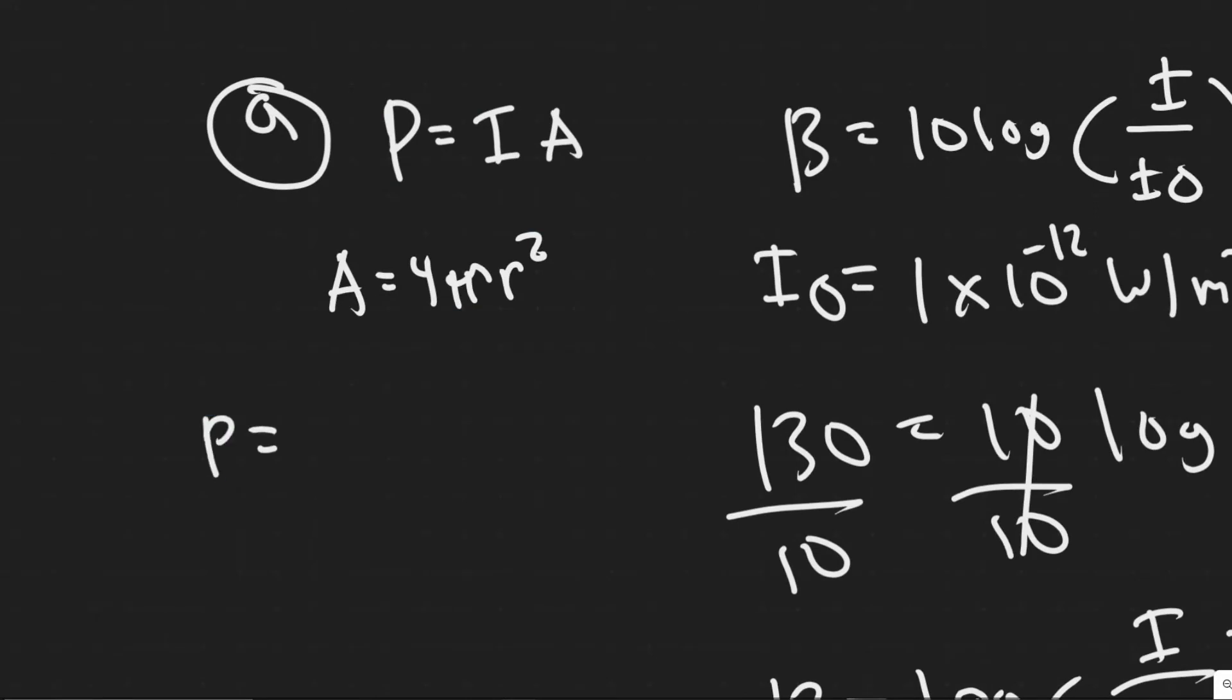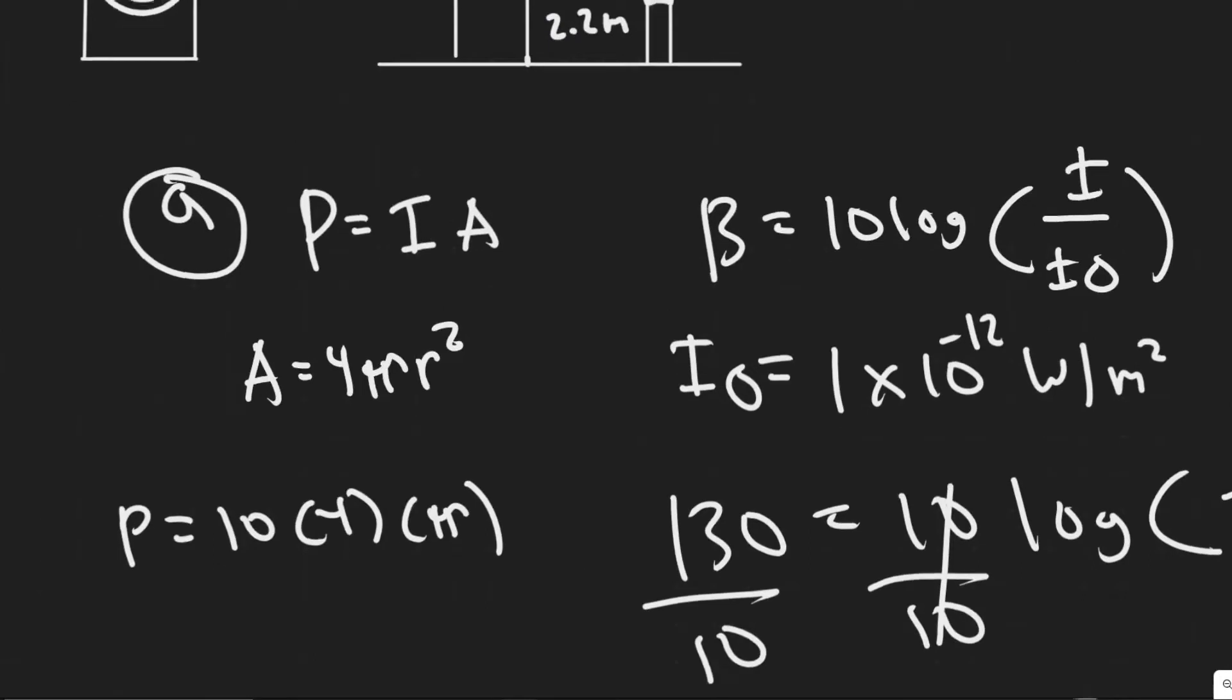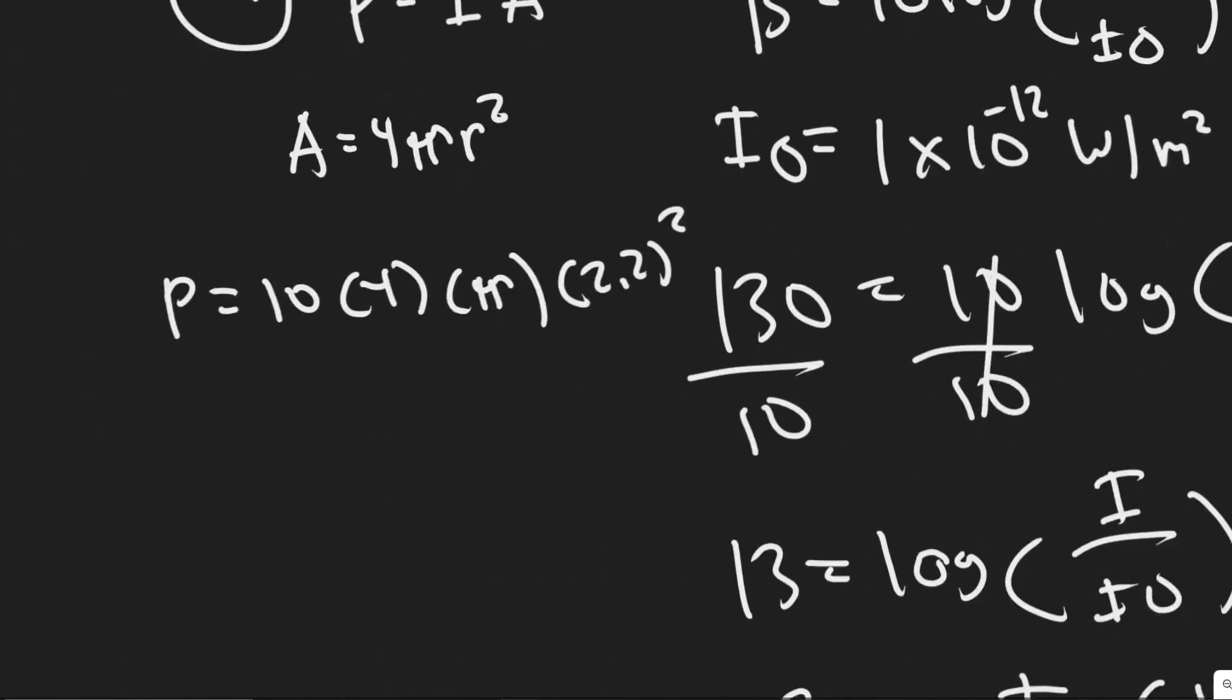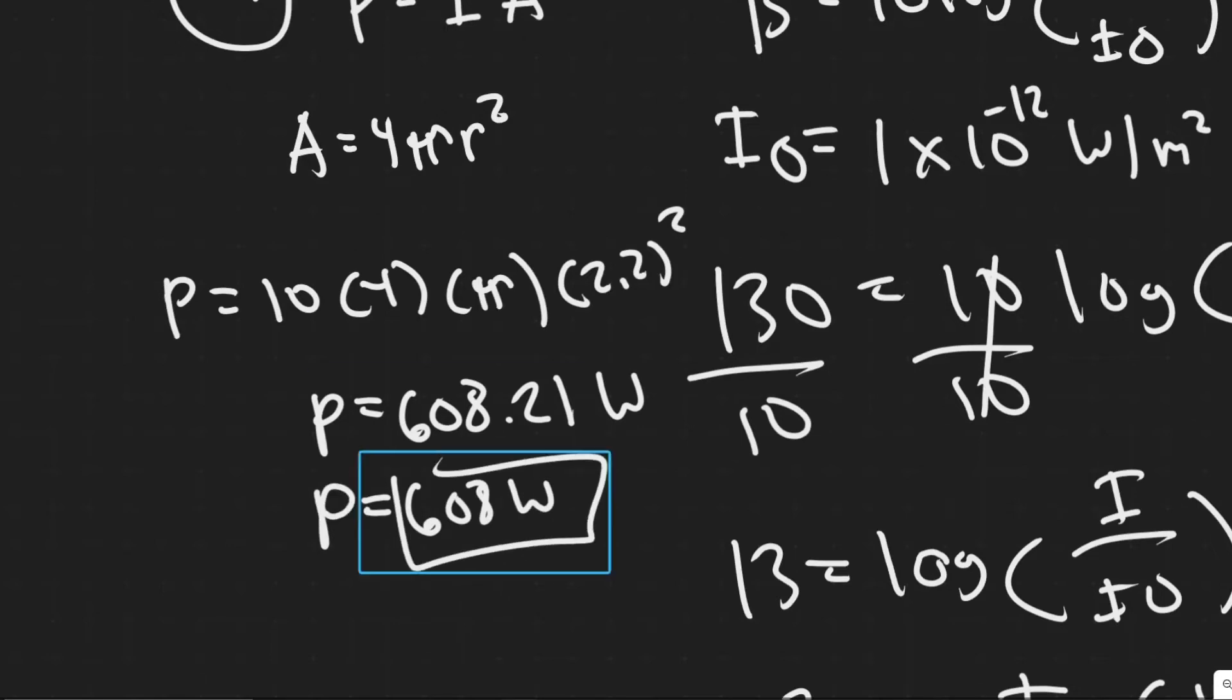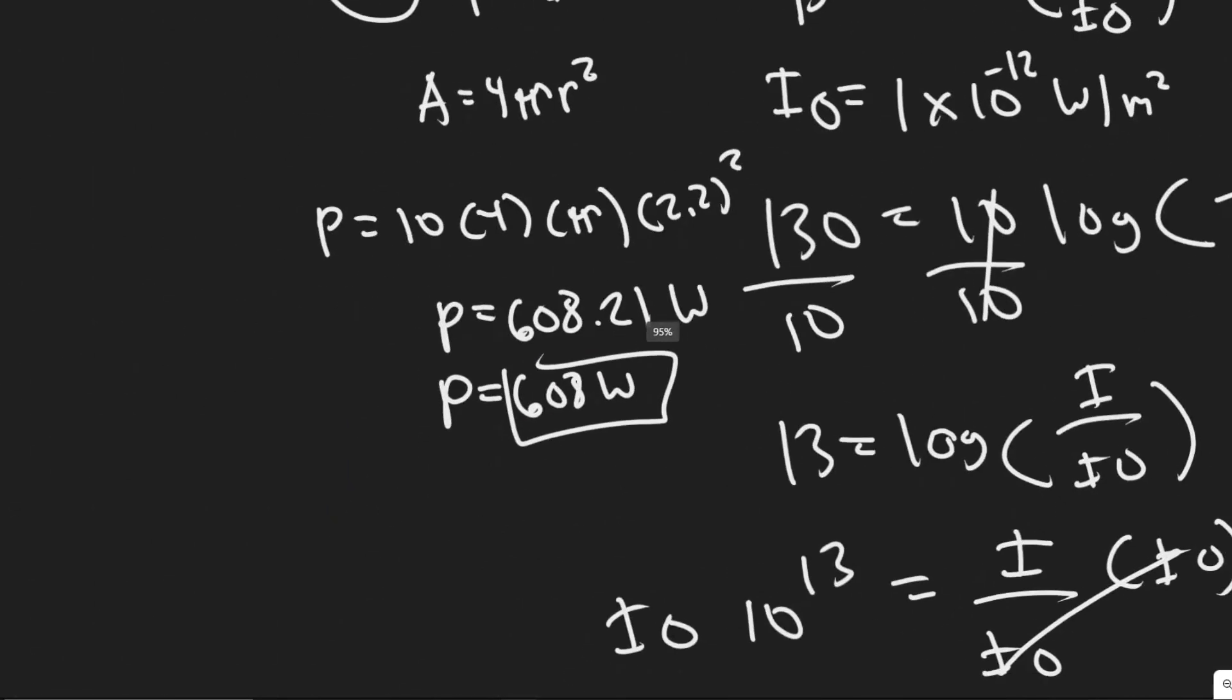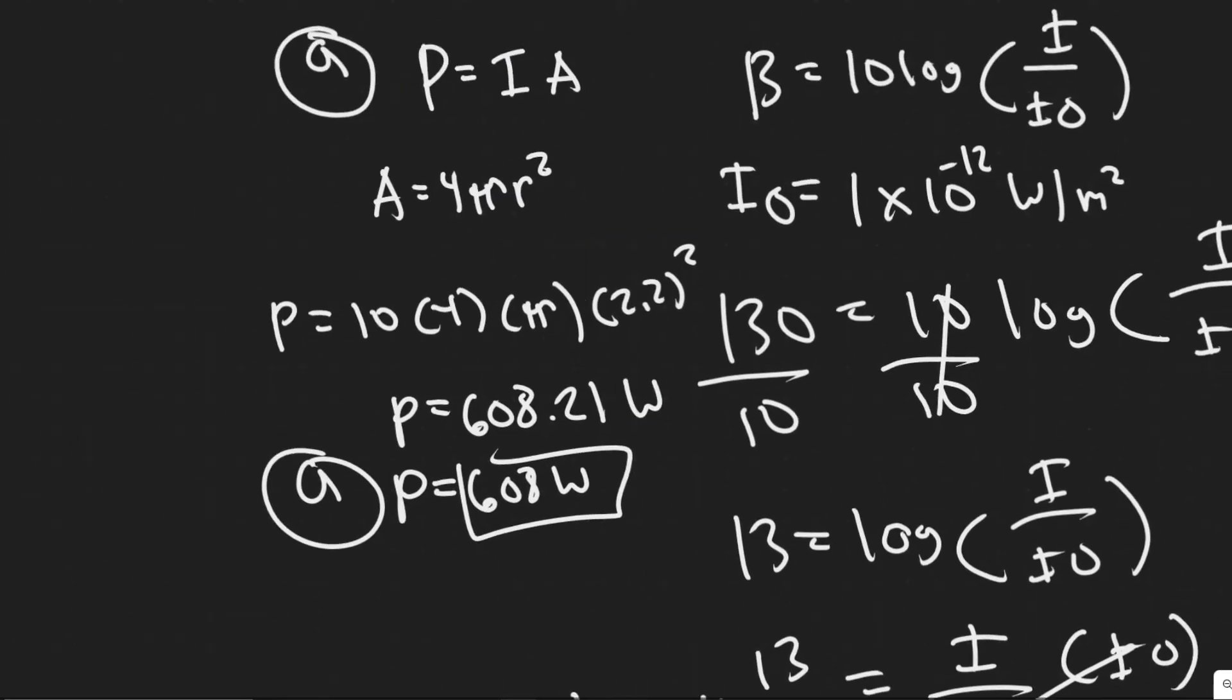And now that we have that, we can go ahead and solve for the power. So P equals I, which was 10, and we multiply by the area. 4 times π, and then the point at which we're out is 2.2 meters. So that would be your radius. So we have 10 times 4 times π times 2.2 squared. So 608.21 watts. You can just round to 608 if you'd like. So 608 watts, that's going to be your answer to A, when they say what was the power output of the speaker. We just solve for it using this formula.